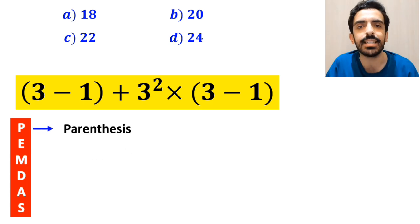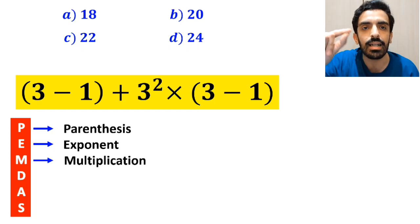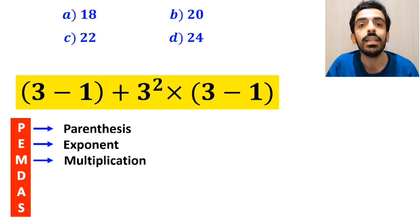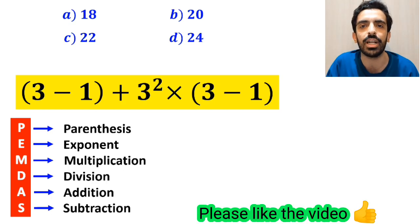In this rule, P stands for parenthesis, E stands for exponent, M stands for multiplication, D stands for division, A stands for addition, and S stands for subtraction.